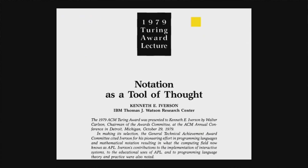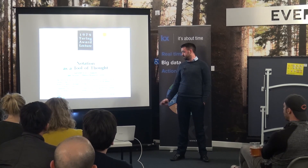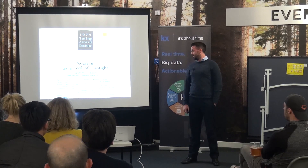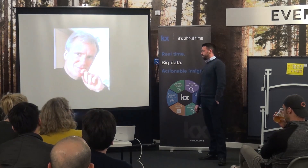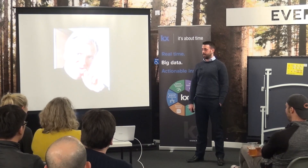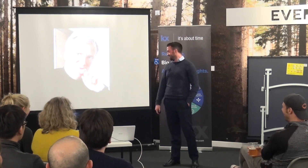A bit of background on where KDB+ came from: there was a guy called Kenneth Iverson who wrote a language called APL. The idea behind APL was that everything was thought of as a list or a vector. He actually won the Turing Award for this work. Moving on from that, Arthur Whitney, who worked with Iverson, wrote a language called A, which became A+, then K, which is the predecessor to a language called Q — which we'll jump into a lot more. Very original names, but here we are.